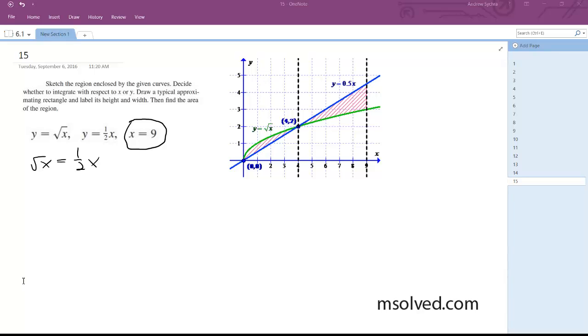Alright, so we're given an additional constraint here where we get x is equal to 9. So we just find the intersection points and then we go out to 9 actually because this third constraint that we normally wouldn't go out to.